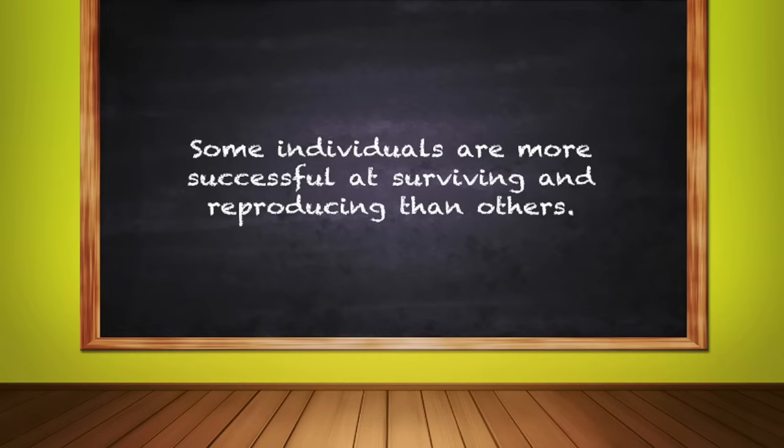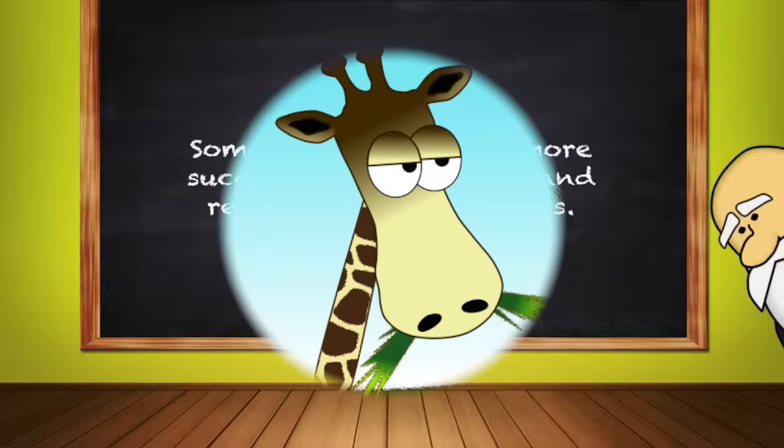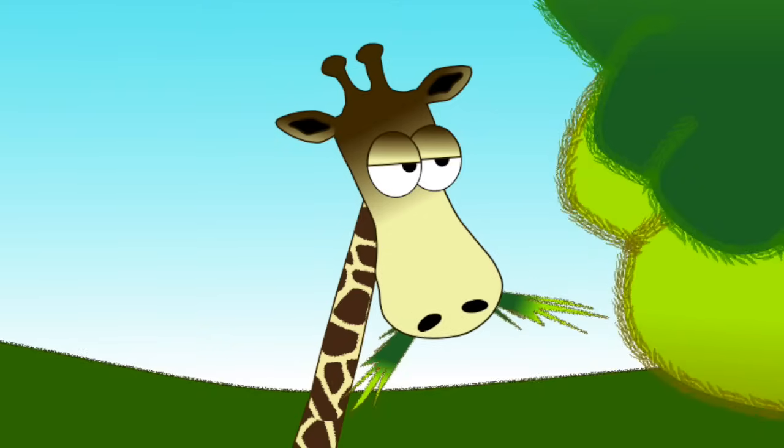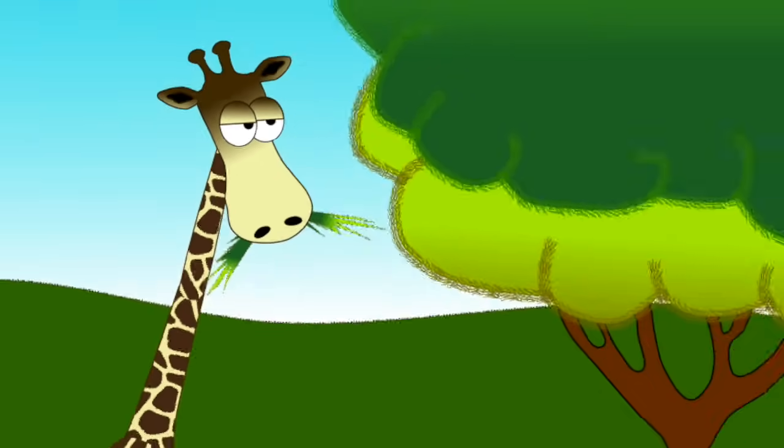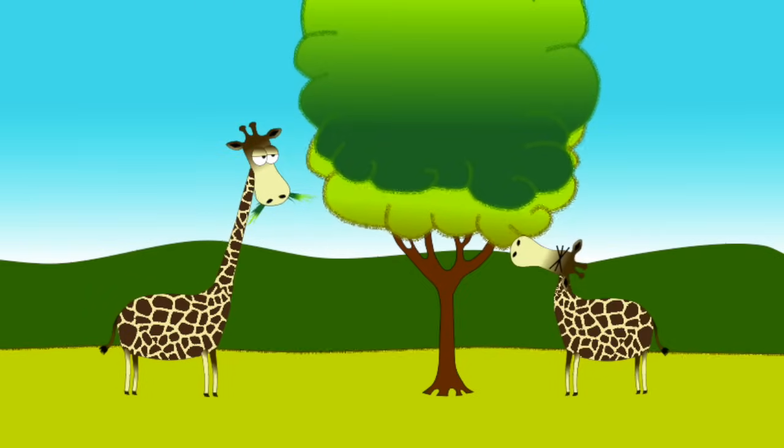Condition number three: Some individuals are more successful at surviving and reproducing than others. In the case of our giraffes, the long neck individual did not acquire its neck by stretching to grab the leaves. Instead, individuals within the population were born with a neck length that was longer than others. Because a longer neck allowed them to reach the food that was otherwise unattainable, it gave them an advantage.